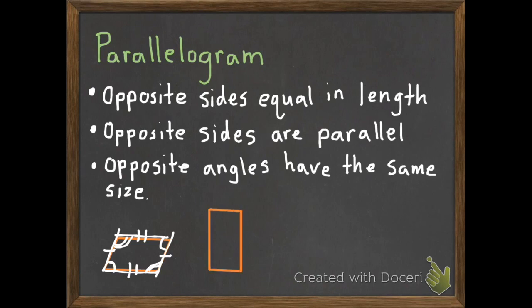Here is the second example. This is also a parallelogram. Opposite sides are equal — that's equal with that, that's equal with that. Opposite sides are parallel — so that's parallel, and those are parallel. Then the opposite angles have the same size: this is 90, that's 90, that's 90, that's 90.